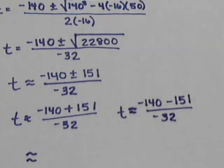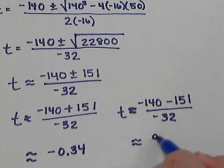This first one, when we do the addition, we get negative 140 plus 151 is 11. Divide it by negative 32, we get about negative 0.34 seconds. And then when we do the minus, we have negative 140 minus 151, which is negative 291, all over negative 32, which comes out to be about 9.1 seconds.